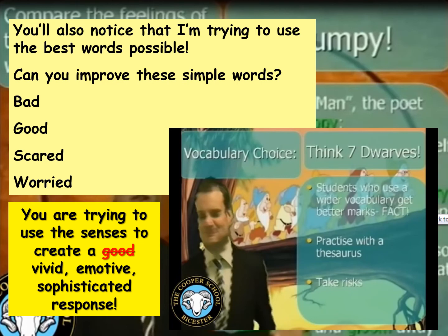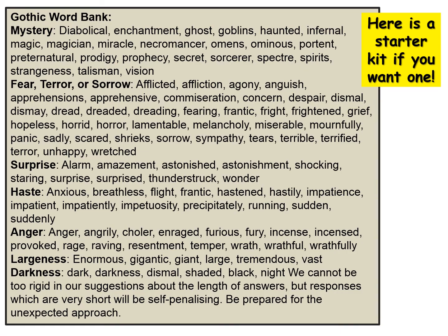As you can see, thinking about vocab choices isn't just about descriptive writing — it's pretty much any element of the exam answer. To expand on your ideas, it's always a good idea to use synonyms — think about other words that mean the same thing but at a higher level to show off to the exam board. In case you're stuck, here's a vocab list emphasising the gothic — lots of different words for mystery, fear, surprise, haste, anger, largeness or darkness.